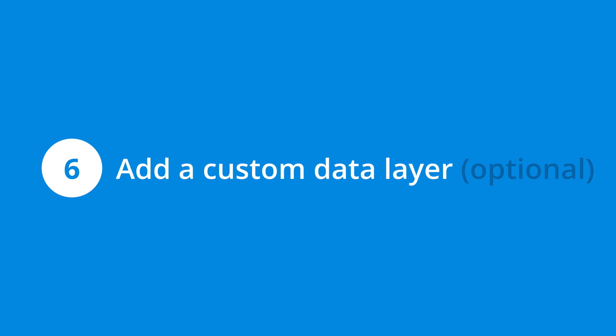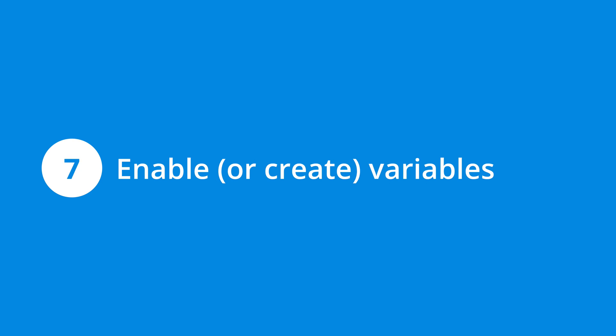Step six is also optional — it's to work with your web developer to add a custom data layer to your website. A custom data layer makes information available to Google Tag Manager. For example, if you're using an e-commerce platform that doesn't provide a Google Tag Manager integration, you'll want to implement a custom data layer that includes transaction details, so you can pass them to Google Analytics, Google Ads, Facebook, and any other tags.